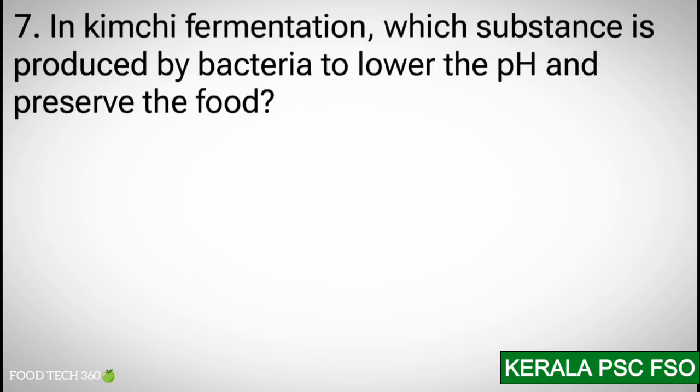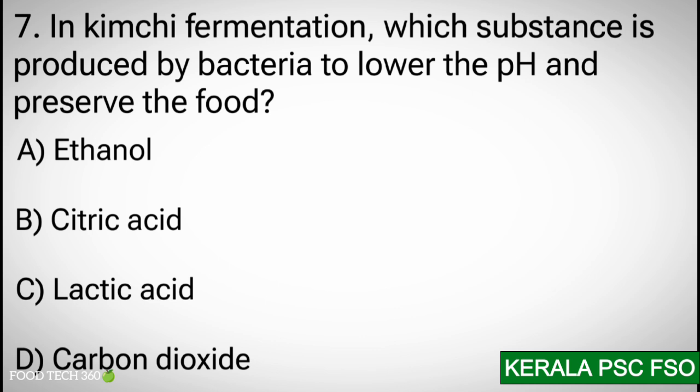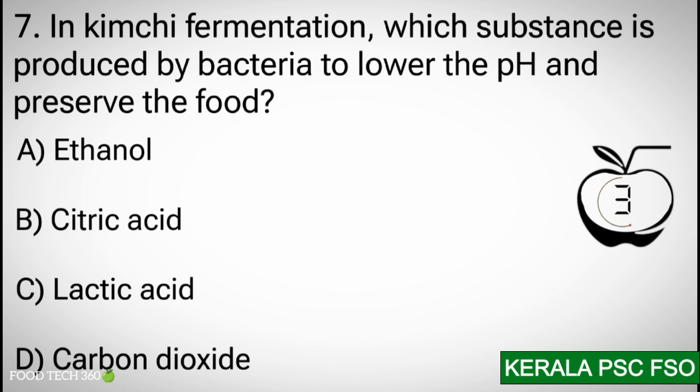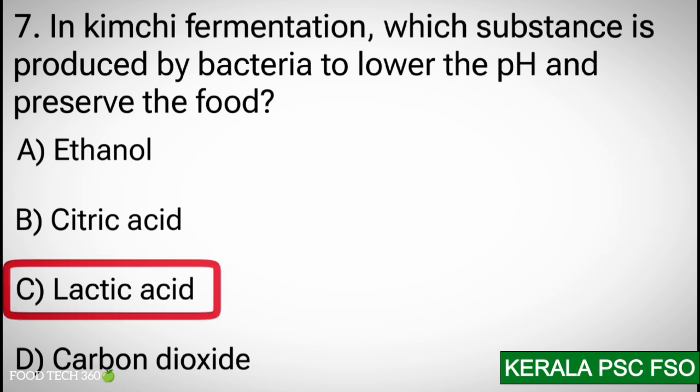Q7. In kimchi fermentation, which substance is produced by bacteria to lower the pH and preserve the food? A) Ethanol. B) Citric acid. C) Lactic acid. D) Carbon dioxide. Correct answer: C — Lactic acid.